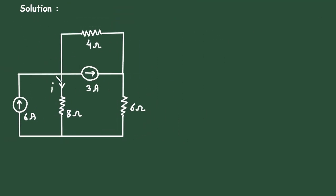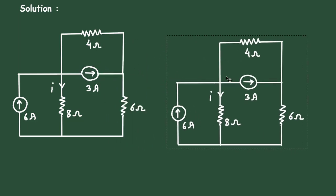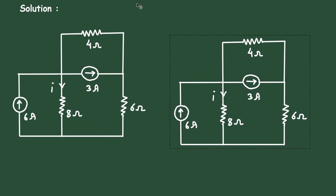In this circuit we can convert this current source into its equivalent voltage source. So let's convert this current source into its equivalent voltage source. When we convert this current source to a voltage source, it will look like this.